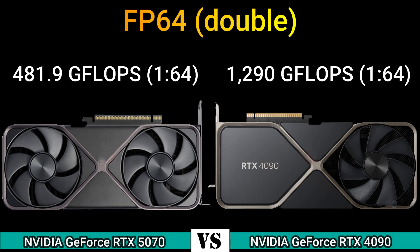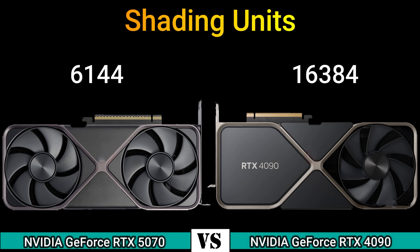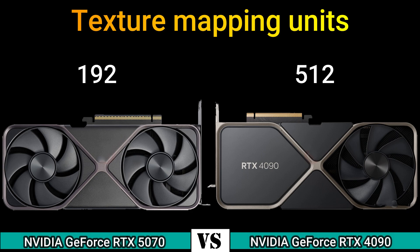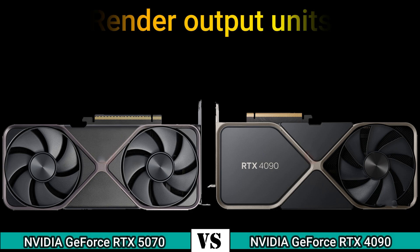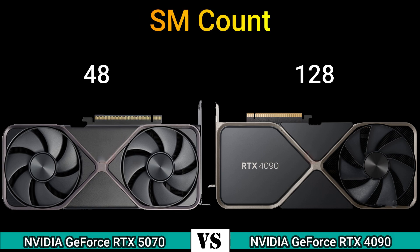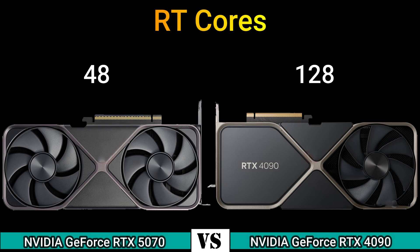FP64 double: 481.9 GFLOPS (1:64) and 1290 GFLOPS (1:64). Shader units: 6144 and 16384. Texture mapping units: 192 and 512. Render output units: 64 and 176. SM count: 48 and 128. Tensor cores: 192 and 512. RT cores: 48 and 128.